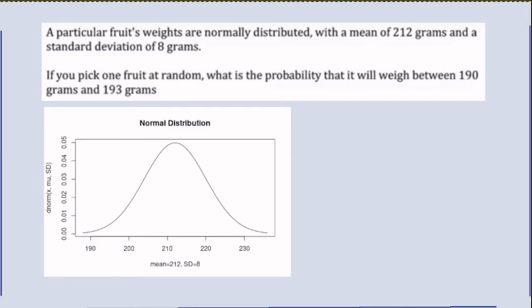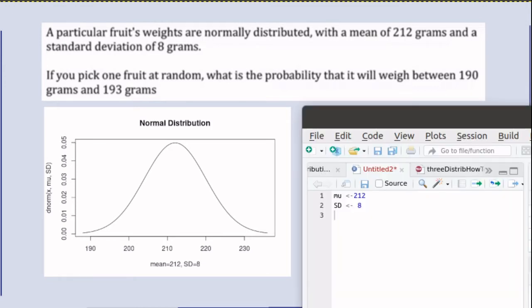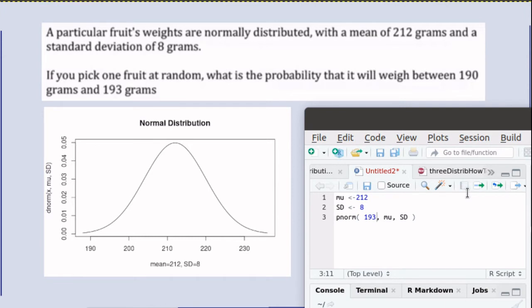The normal distribution we're looking at has a mean of 212 and a standard deviation of 8. We'll add that information. R has a function called PNORM. PNORM will find the probability of getting a number below, or less than or equal to, a given number.